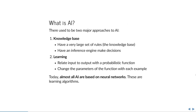There are two major approaches to AI: the knowledge base and learning — machine learning or statistical learning. The knowledge base approach involves a very large set of rules and an inference engine to make decisions based on those rules. It is a logical way to approach intelligence, but the disadvantage is that you need almost every rule you can think of. The learning approach is very different — it relates the input to the output with a probabilistic function, the same as we've been doing in regression analysis.